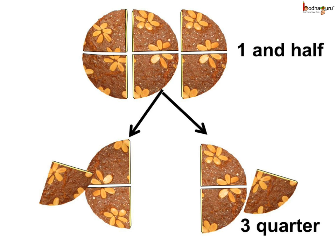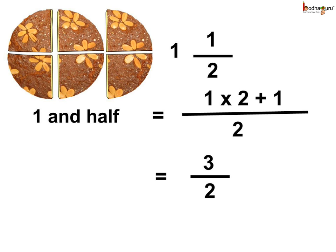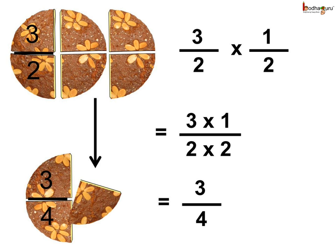Now Aman bought 1 and a half kg cake and wanted to divide it into 2 halves. Here each part would be equal to 3 quarters of a kg. 1 and a half kg means 2 multiplied by 1 plus 1 by 2, which is 3 by 2 kg. Now we want to find half of 3 by 2 kg, and it is equal to 3 quarters.